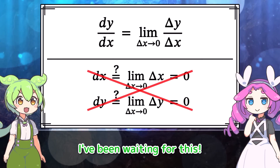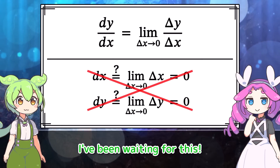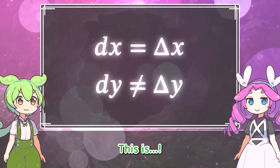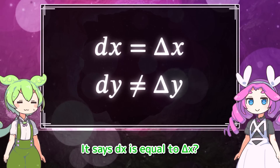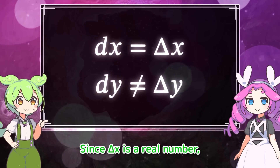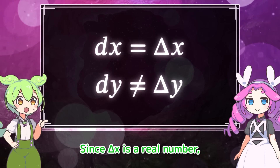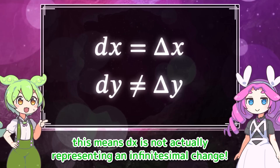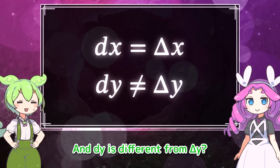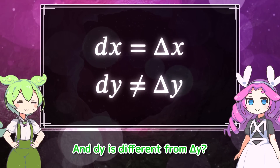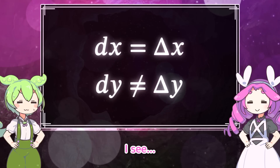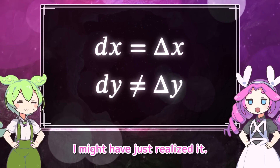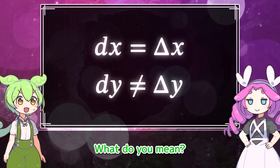Watch out — a hint is coming. I've been waiting for this. It says dx is equal to delta x. Since delta x is a real number, this means dx is not actually representing an infinitesimal change. And dy is different from delta y? I don't get it at all. I see — I might have just realized it.